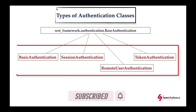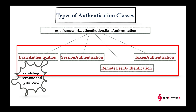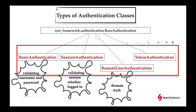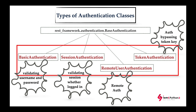These are the four authentication classes available in Django REST Framework. BasicAuthentication validates the username and password at login. SessionAuthentication validates whether an existing session is valid after login. TokenAuthentication and RemoteUserAuthentication are important when dealing with external systems — with TokenAuthentication you pass a token key that may be replaced every certain period of time.